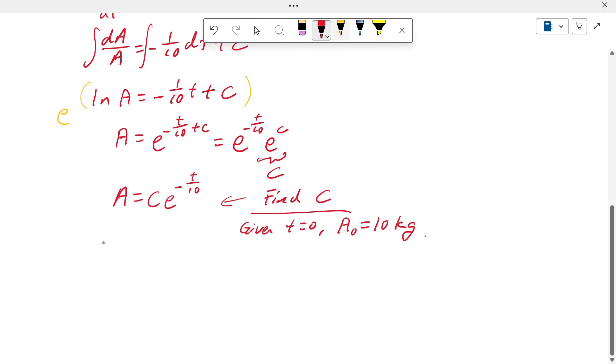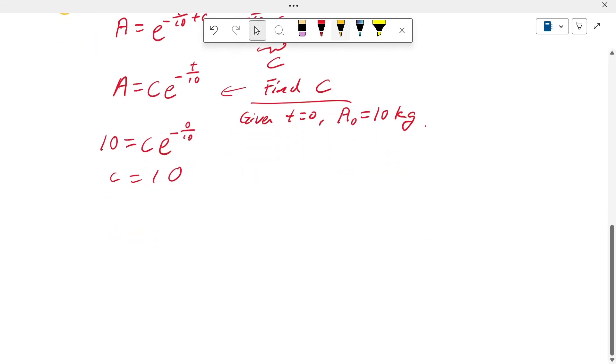We substitute into this equation to find the C value. So A equal to 10, C exponential minus 0 divided by 10. This gives us C is equal to 10. We substitute this.